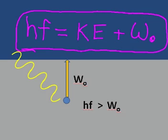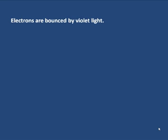This then explains our statements at the beginning. Electrons are bounced by violet light. Violet light has a higher frequency, has enough energy to bounce the electrons. They're not bounced by red light. Red light has lower frequency, and it won't bounce an electron.